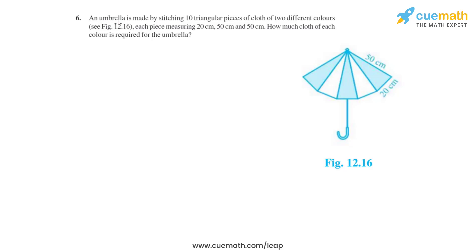Question number six of this exercise says that an umbrella is made by stitching 10 triangular pieces of cloth of two different colors as shown in figure 12.16. We can see there are two colors, a light blue color and a white color.